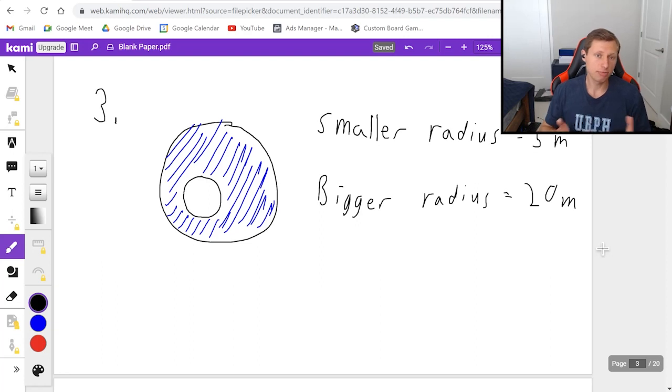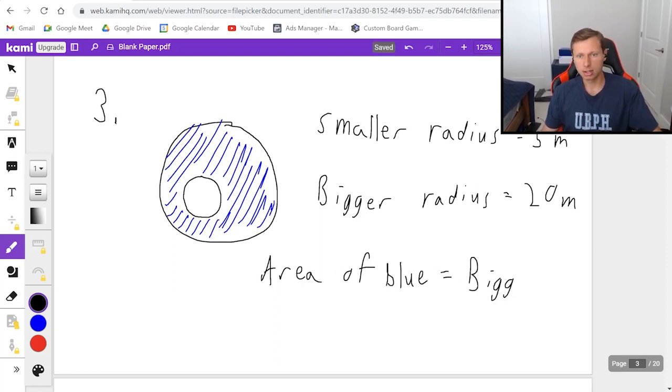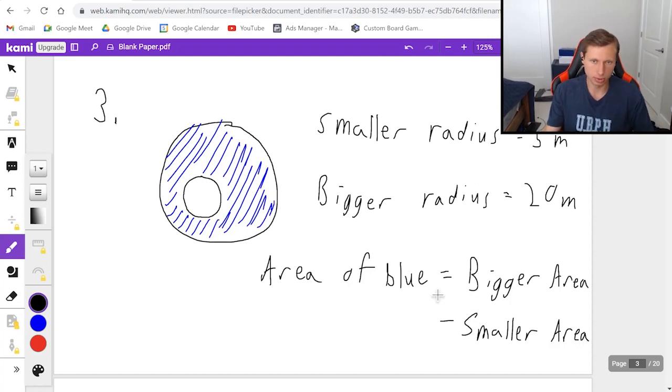So basically, if you want to find the area of the blue, think of it like this. Area of blue is equal to the bigger area, the bigger circle, minus the area for the smaller circle. That's the idea we're going to use here. And how are we going to find the area of the bigger and smaller circles? Well, remember, we have the equation for area. It's just pi r squared.